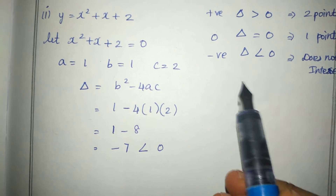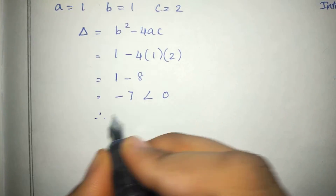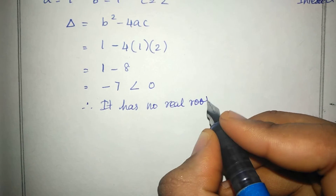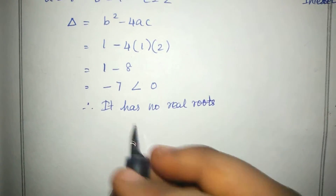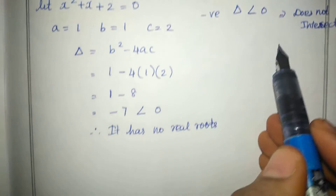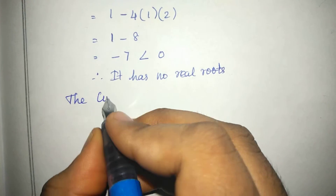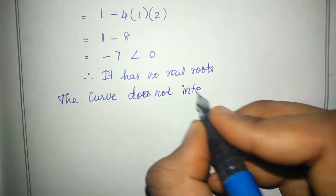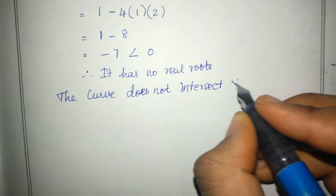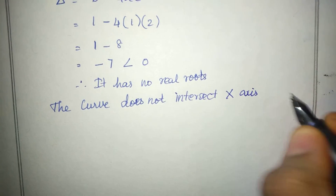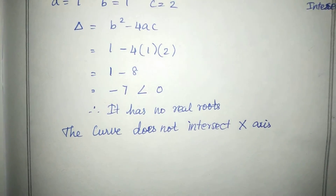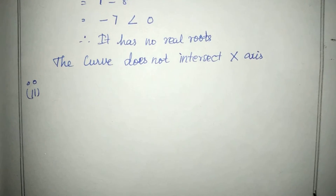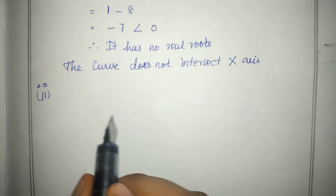Since discriminant is less than 0, it has no real roots. Therefore, the curve does not intersect the x-axis. First subdivision is complete.